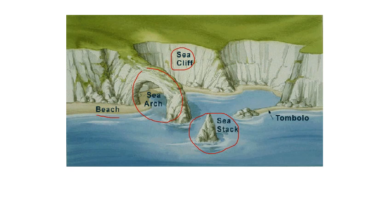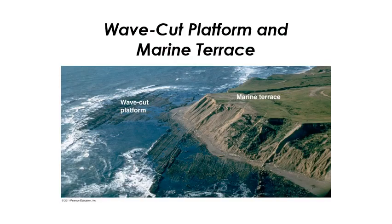Another interesting landform along emergent coasts is a tombolo. Here we have a little sea stack with sand deposited out forming a peninsula. Here's also what's called a marine terrace, with a wave-cut platform. You can see wave action has worn away at the coastline and leveled it off. What we have here is a series of uplift events: the land uplifts relative to the coastline, the waves wear it flat, and then another series of uplift forms a new cliff. So we can get a series of terraces.